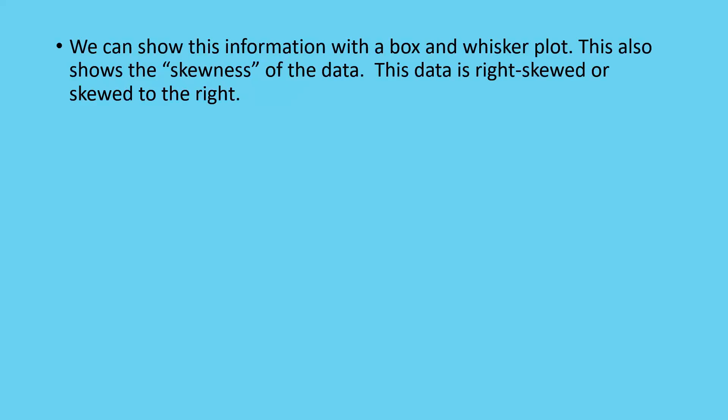Now, we also need to look at what else this can tell us. We can show the information with a box and whisker plot. This also helps to see the skewness of the data. This data is right skewed or left skewed to the thing.